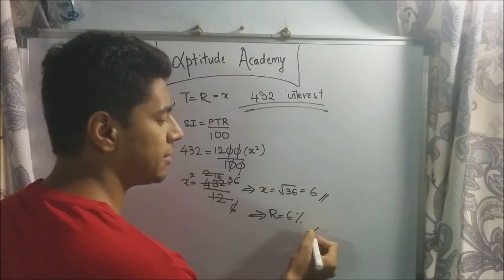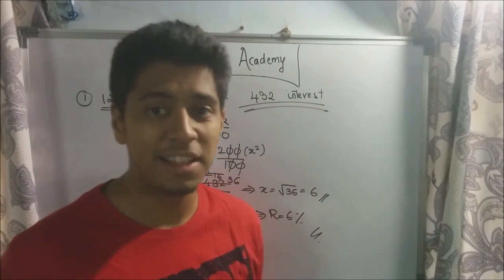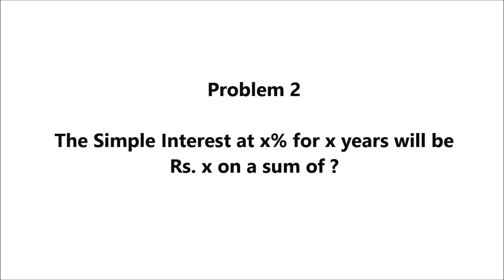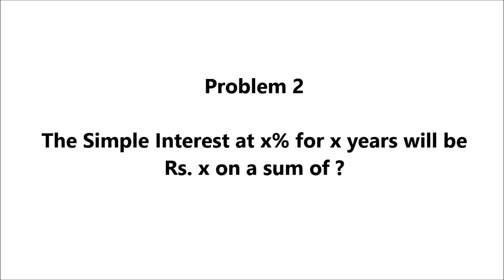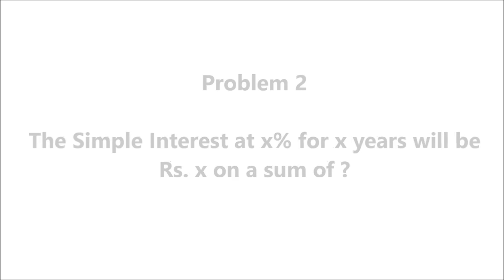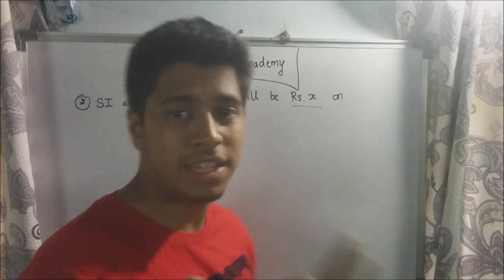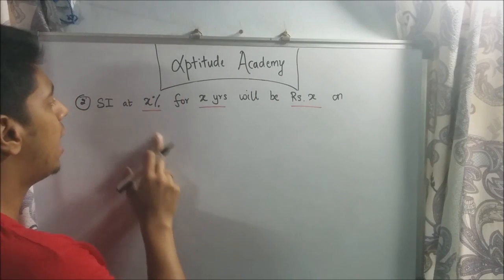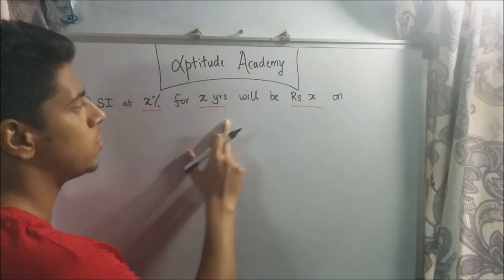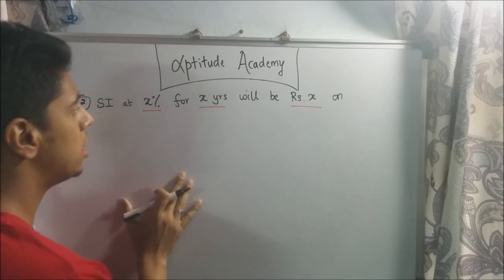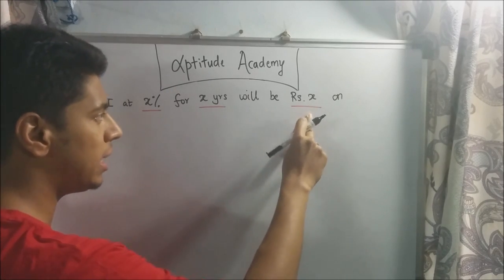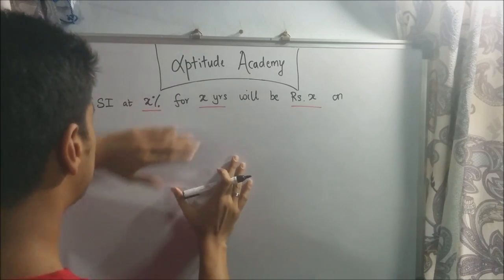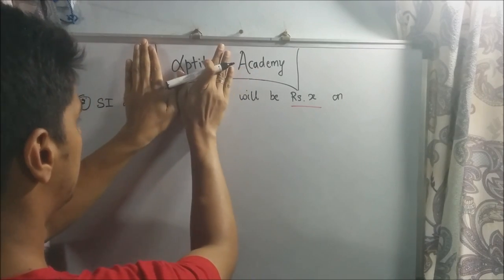Problem 2: The simple interest at x percent for x years will be rupees x on a sum of — what is that sum? For the second problem, you need to identify what's given and what's asked. They've said SI at x percent for x number of years will be rupees x — but is this the old money, new money, or simple interest?